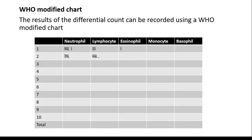The results of the differential count can be recorded in the WHO modified chart. Here, 10 cells are recorded in each row. When 10 cells have been recorded, move to the next row. When 10 cells have been recorded in all 10 rows, a total of 100 white cells would have been counted.